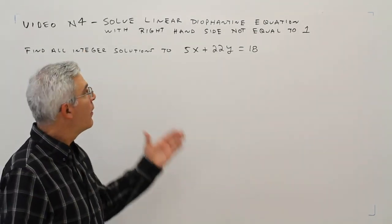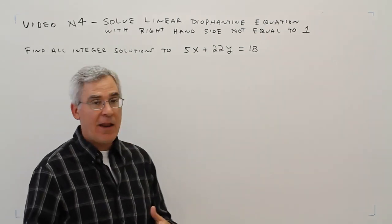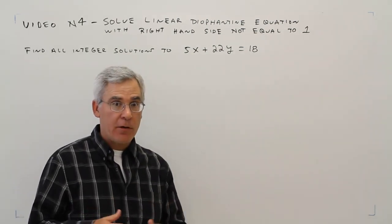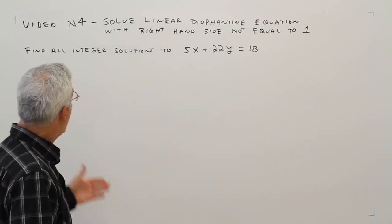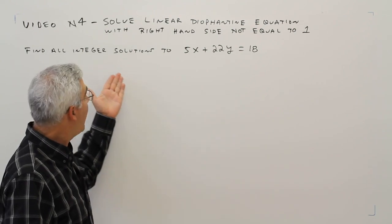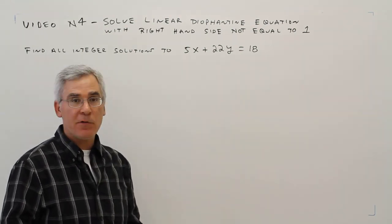Welcome to video N4. We're going to solve a linear Diophantine equation with the right-hand side not equal to 1. So there will be one tiny additional step in this problem. Here's the problem: Find all integer solutions to 5x + 22y = 18.